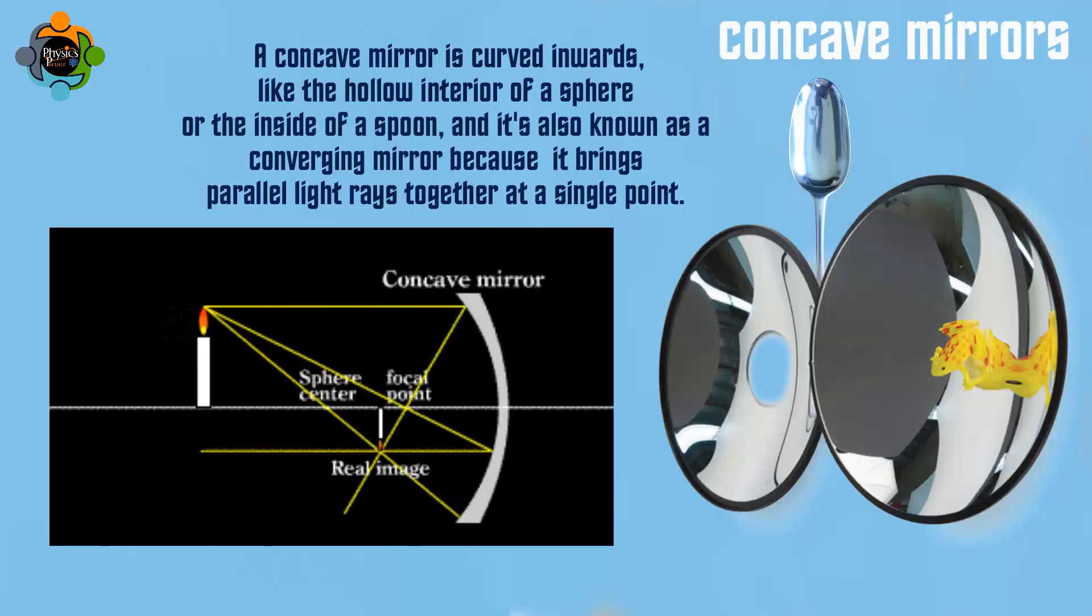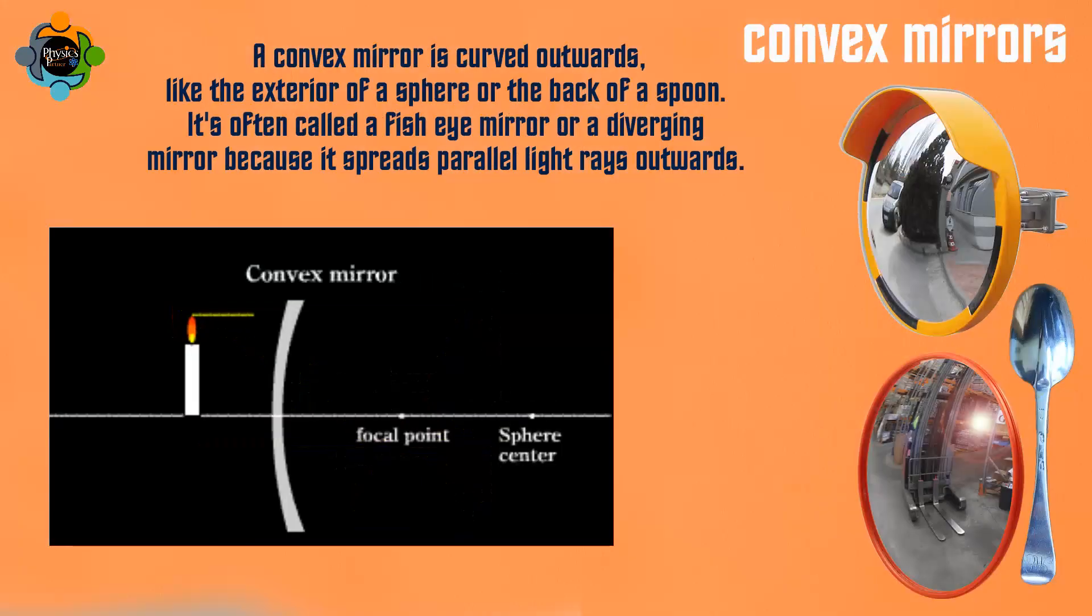In contrast, a convex mirror is curved outwards, like the exterior of a sphere or the back of a spoon. It's often called a fish eye mirror or a diverging mirror because it spreads parallel light rays outwards.